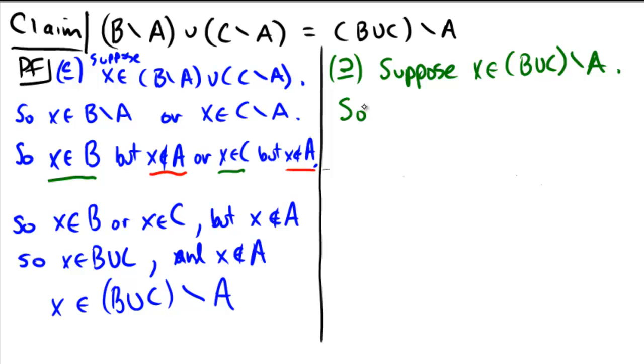What does this mean? That would mean that x is in the first set, the b union c, but x is not in a. But x is in b union c, so that would mean that x is in b, or x is in c, but we know for sure that x is not in a. Certainly x is not in a.